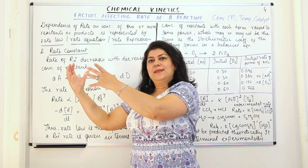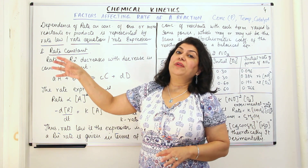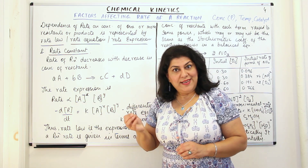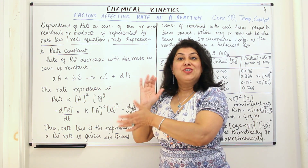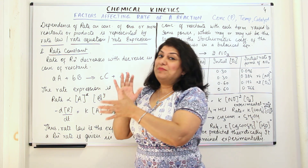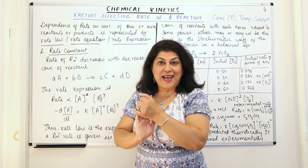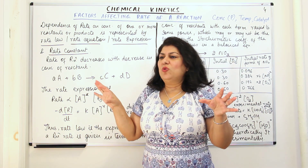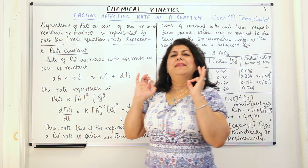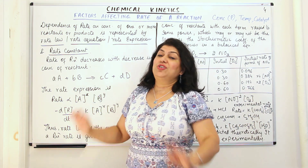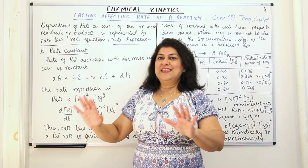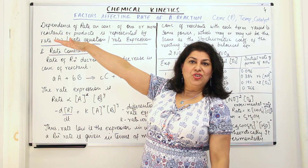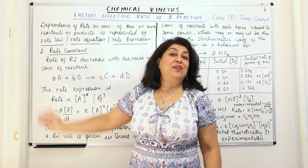But as the reaction proceeds, the concentration of the reactants goes on decreasing. And as the concentration of the reactants goes on decreasing, the number of collisions decreases. If the reactants are not coming in contact as much, the rate of the reaction will go down. So this shows that the rate of a reaction is directly dependent on the concentration of the reactants. The more the concentration of the reactants, the more is the rate of a reaction.